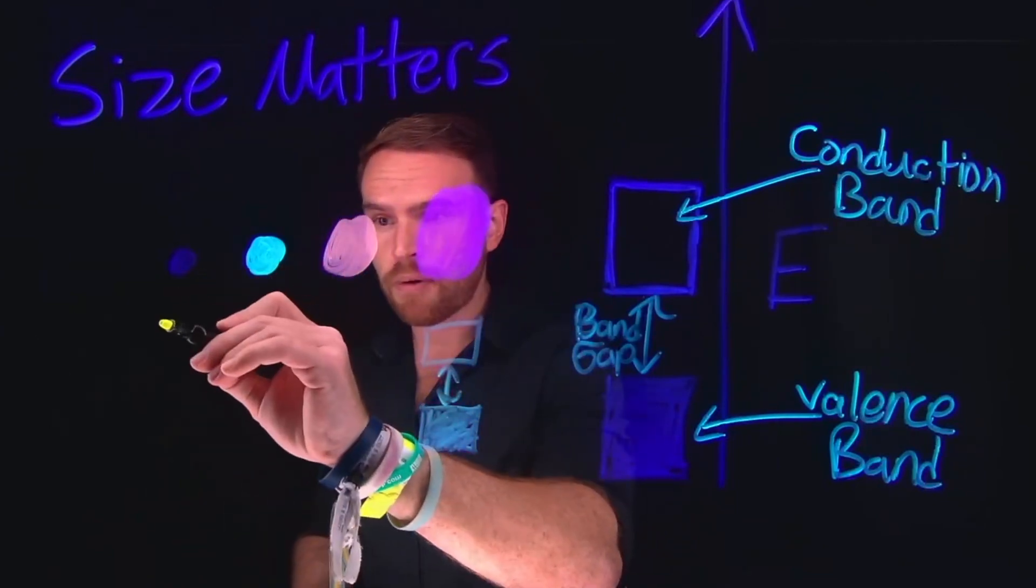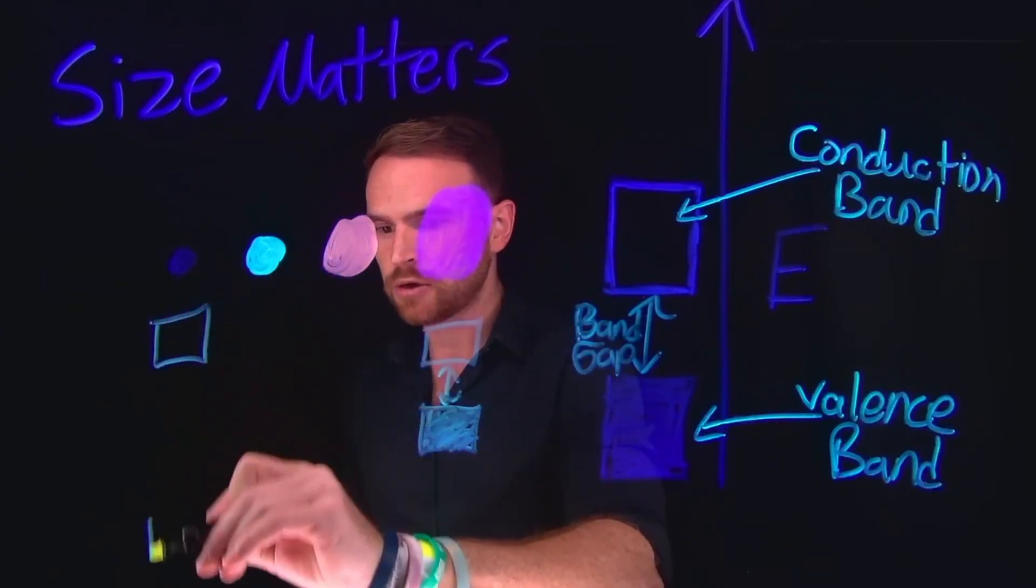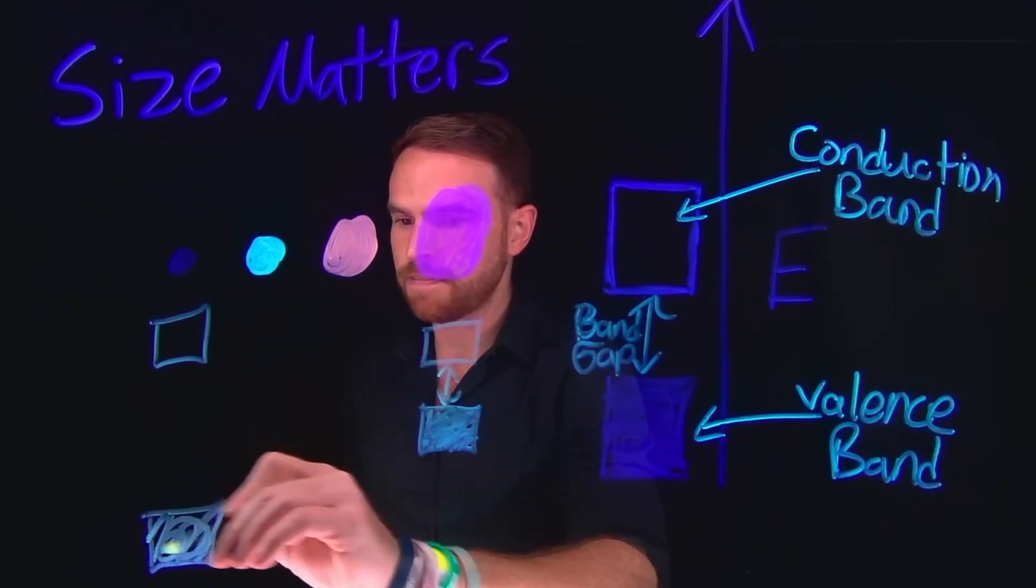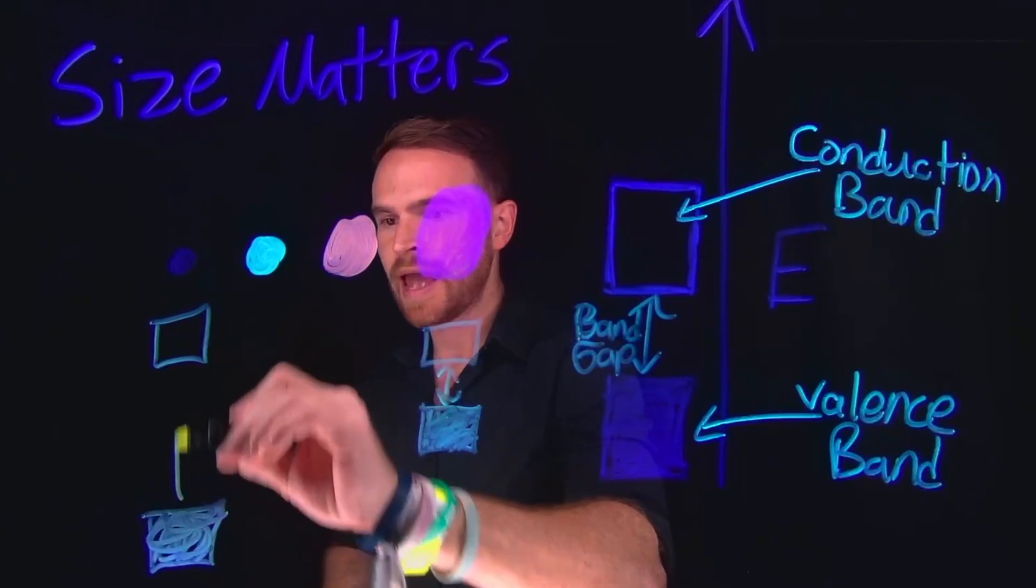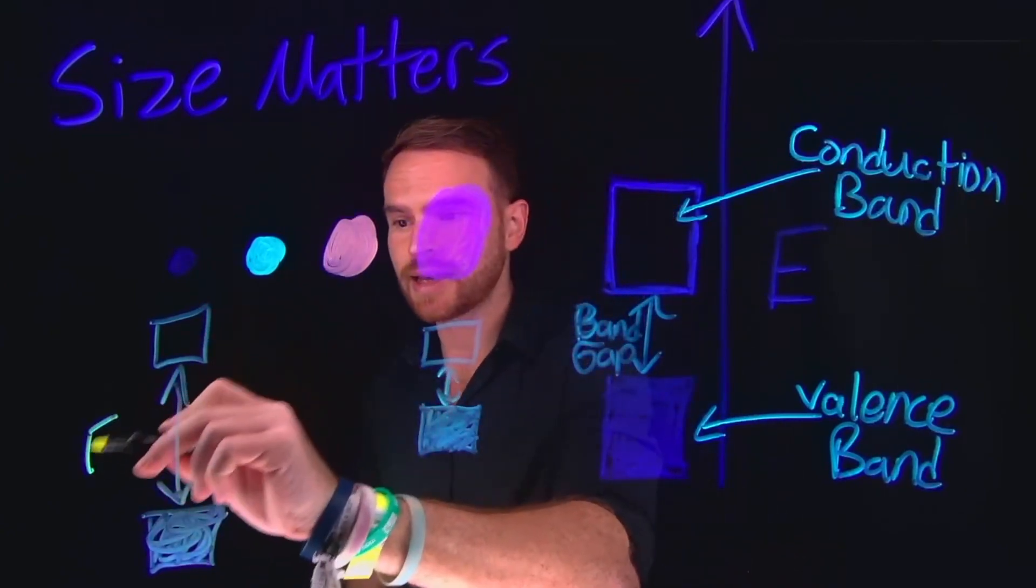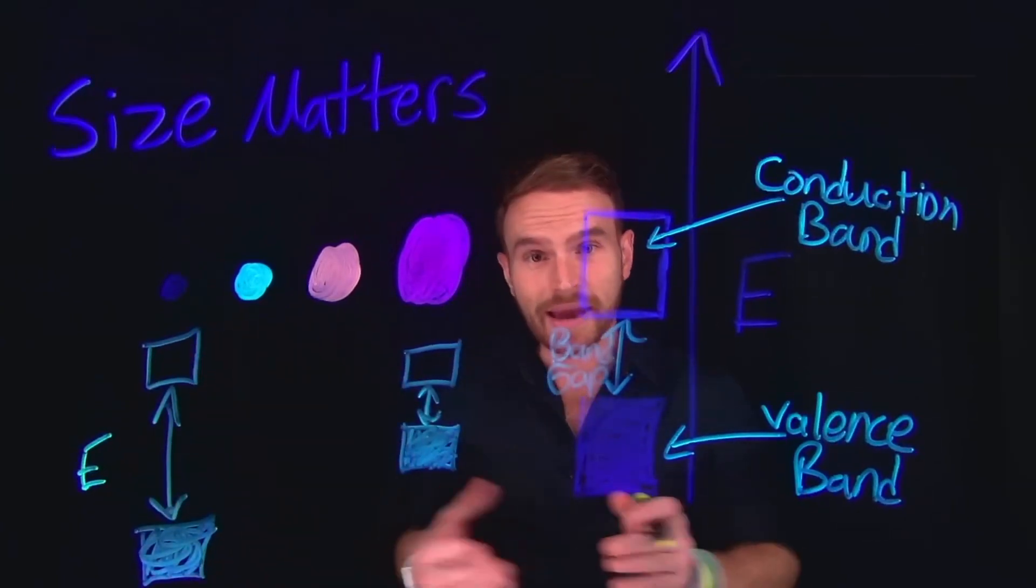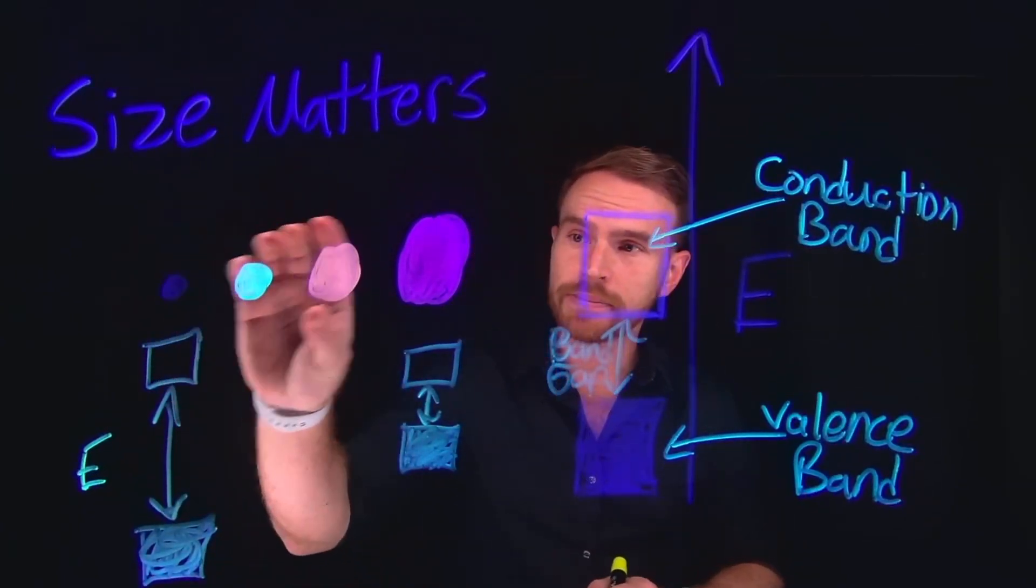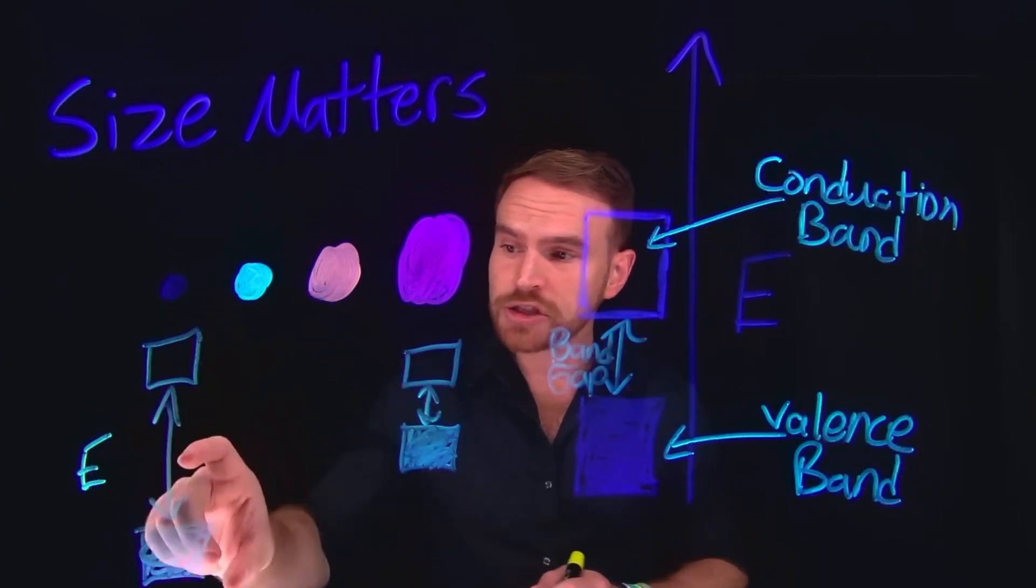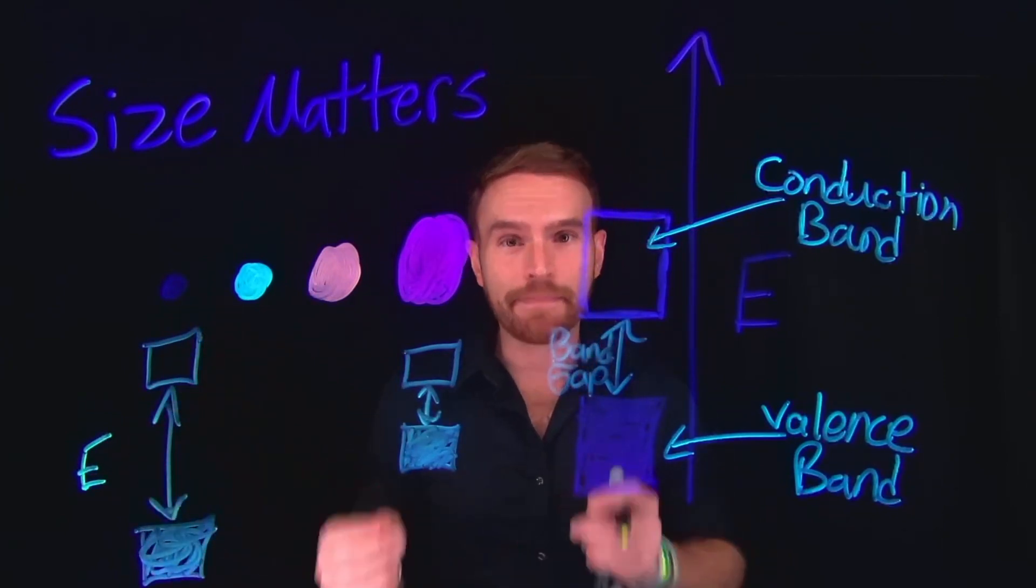Conversely, for really small particles, the band gap energy grows very wide. So the energy difference between the populated valence band and the empty conduction band is going to be much larger in the case of our smaller particles. And this ability to create quantum dots of varying size allows us an opportunity to modulate or manipulate that band gap of energy.